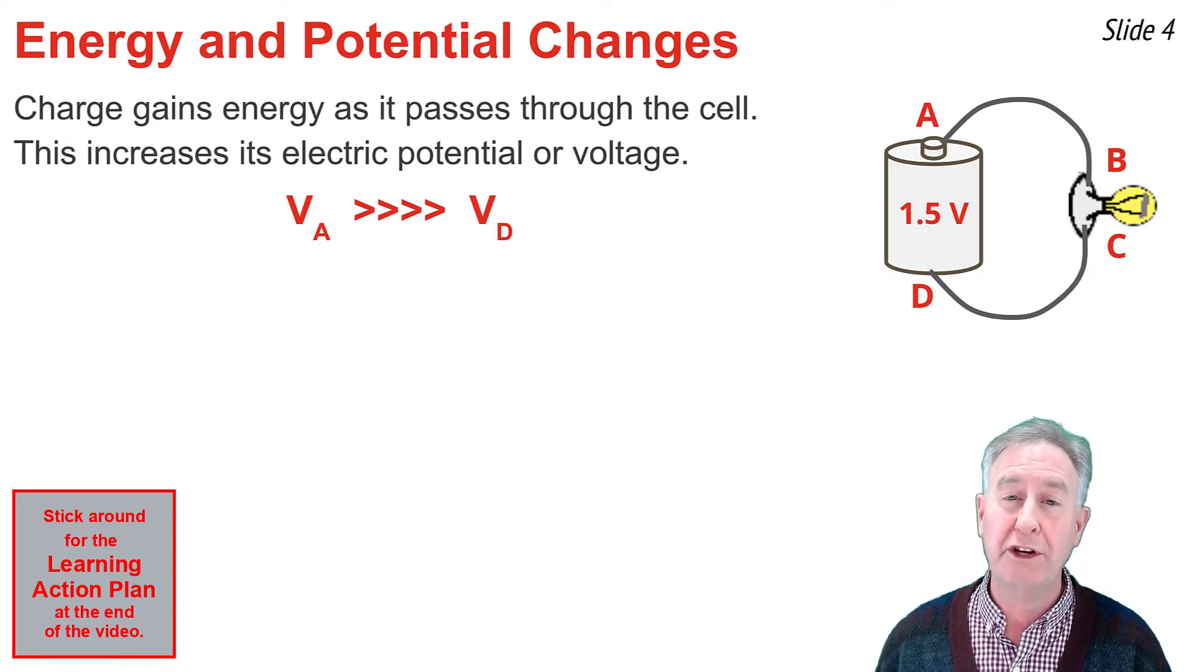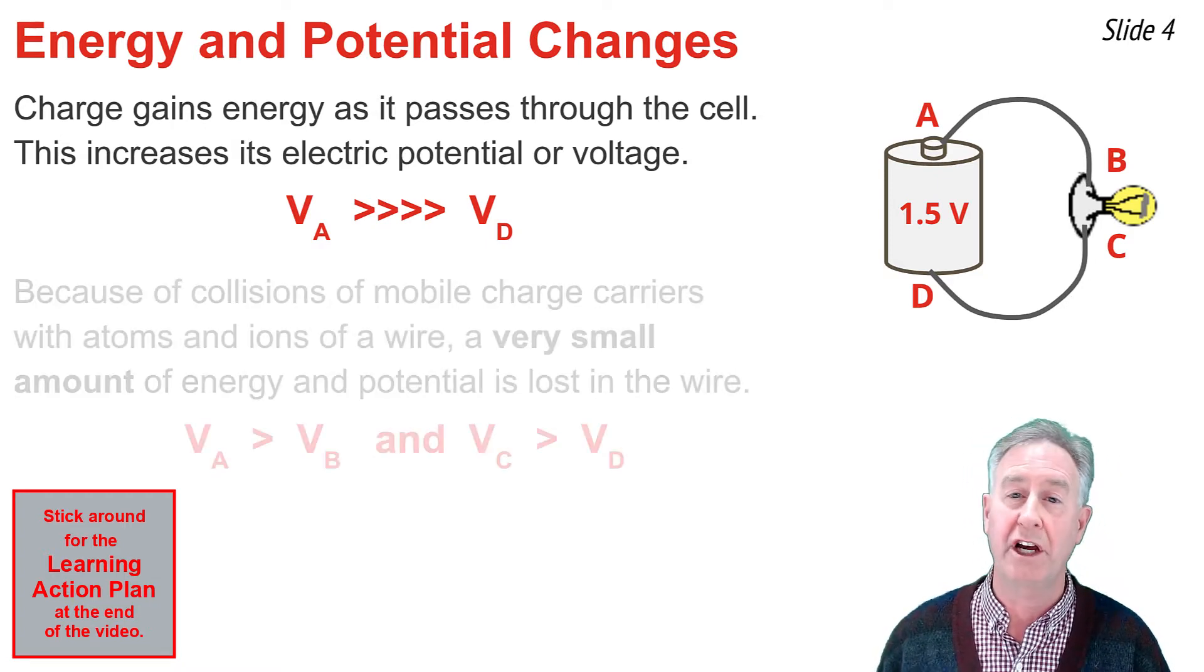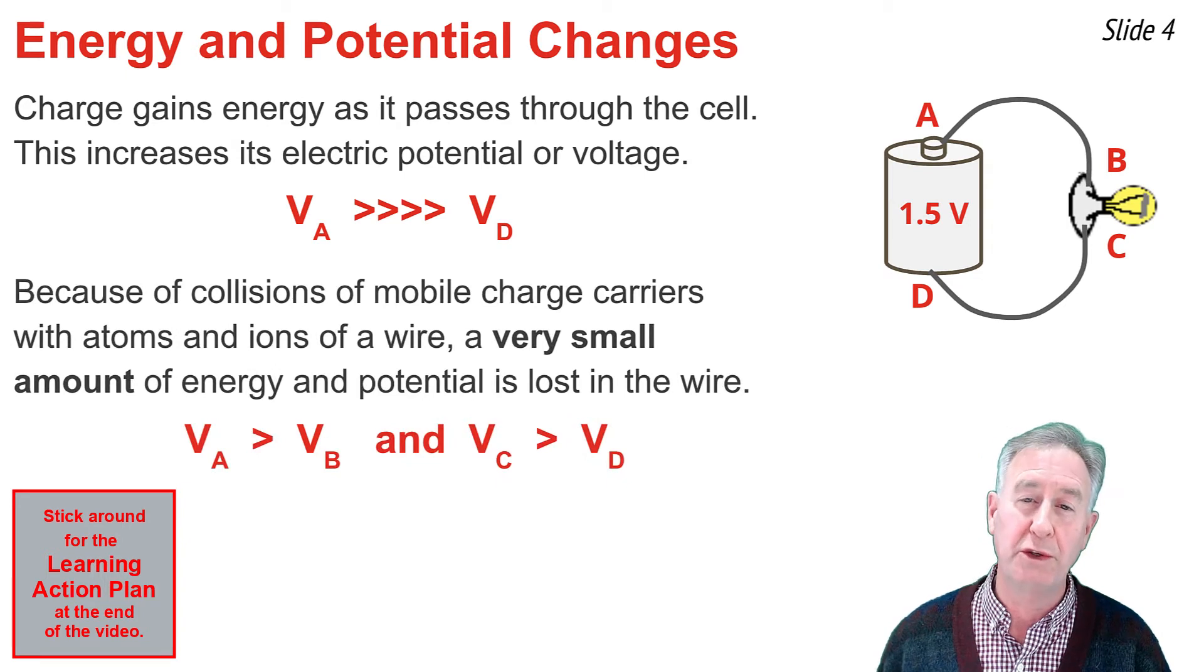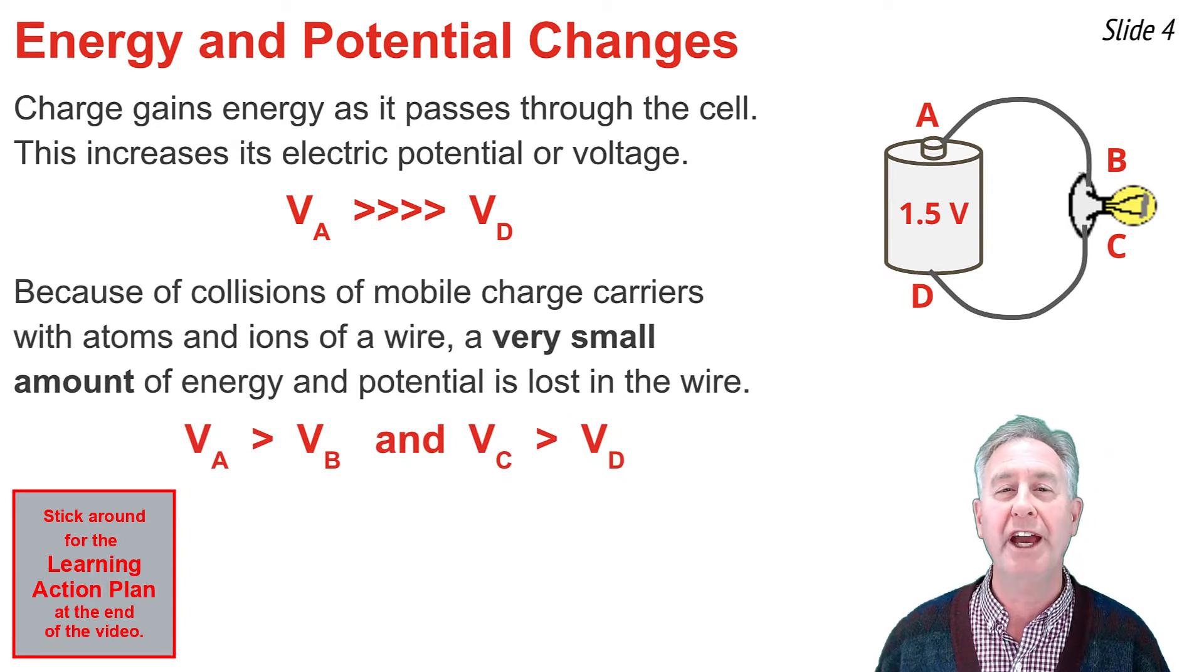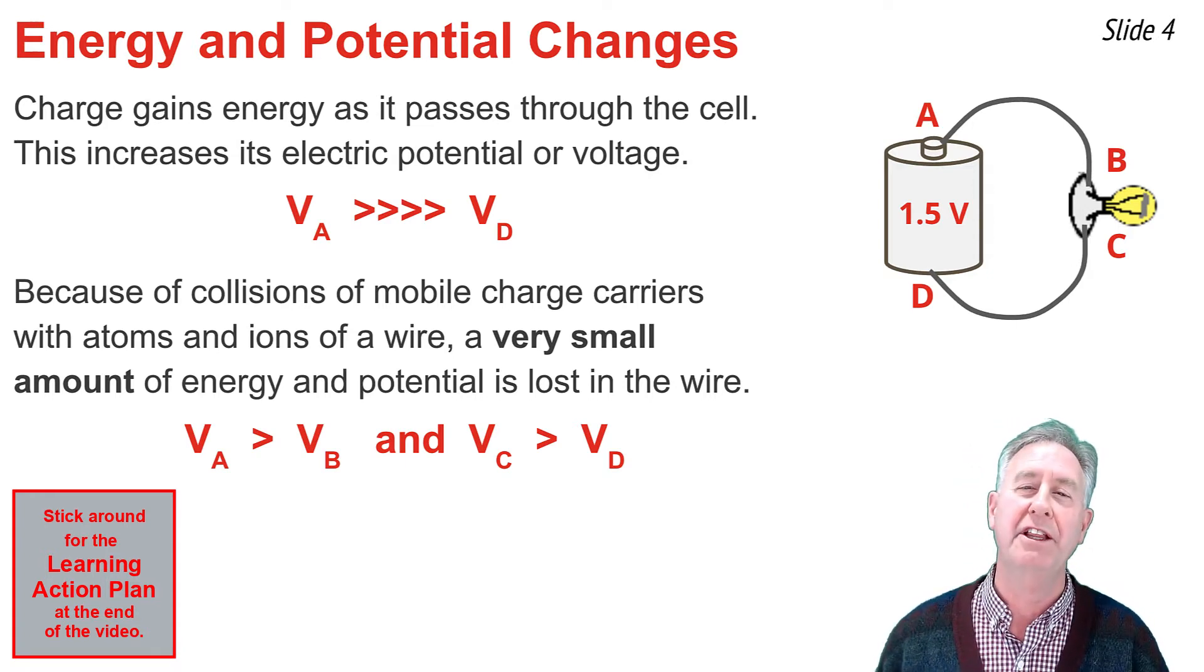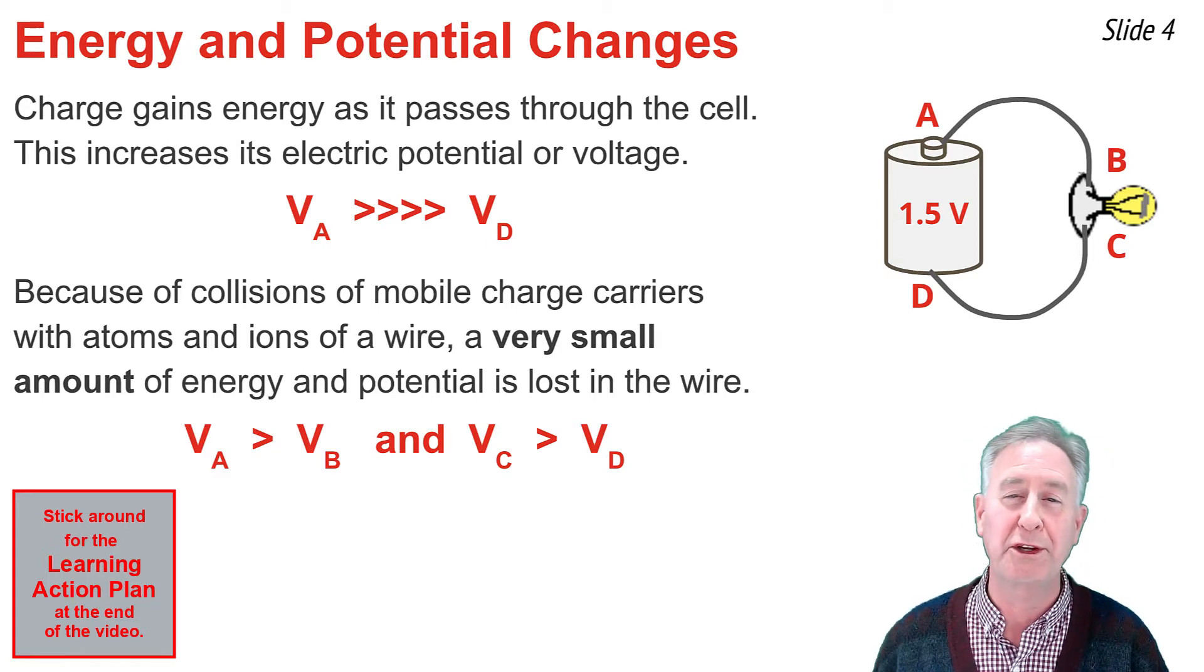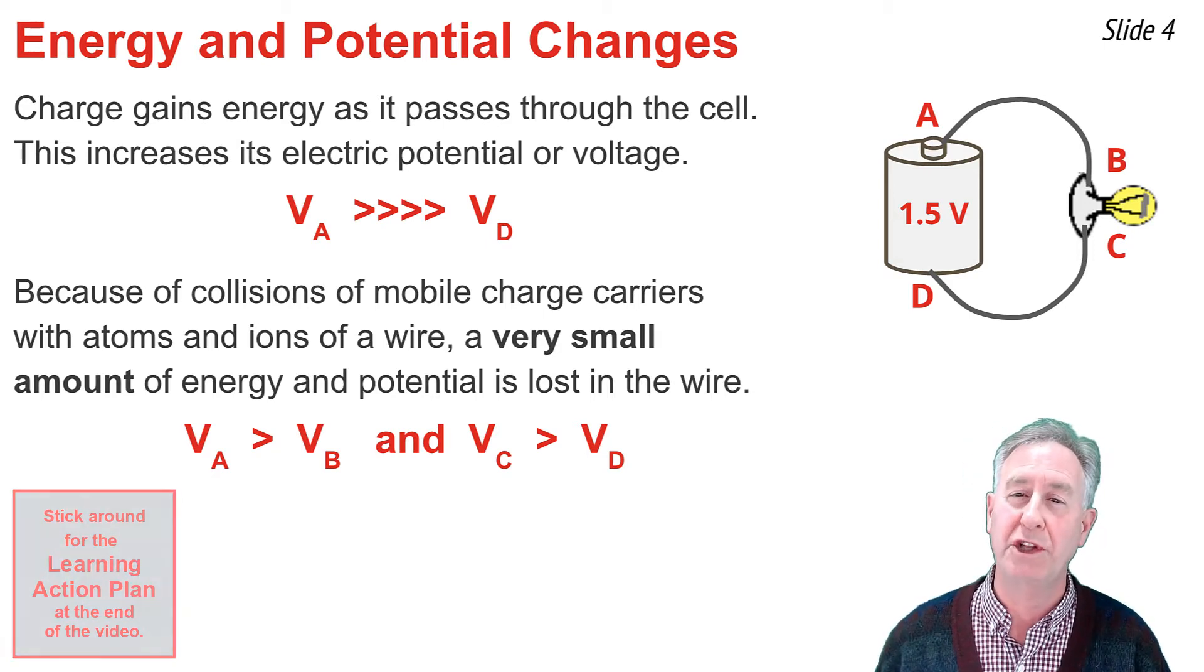But as charge carriers pass through the wires of an electric circuit, there are small amounts of energy losses. These energy losses are due to the collisions of those charge carriers with the atoms and ions of the wire. This causes the electric potential at A to be just a little bit greater than the electric potential at B, and the electric potential at C to be just a little bit greater than the electric potential at D.